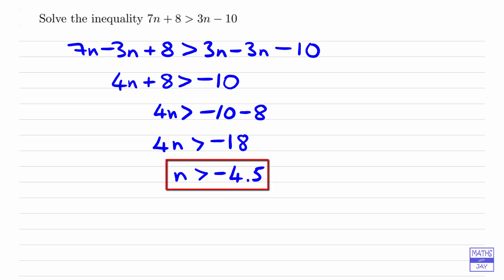And then we'd want to do our two checks. So first of all, we think about what happens when n is actually equal to minus 4.5. So I know that n has got to be greater than minus 4.5, but we should find that if we've done this correctly, that when n is actually equal to minus 4.5, then 7n plus 8 is actually equal to 3n minus 10. So let's see what we get.